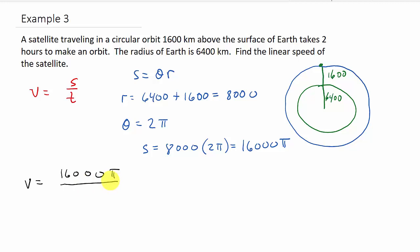Now, the angle that it made is two pi. Now, how long did it take it to make that angle? Well, it took it two hours. So our time t is two. And so this would be 8,000 pi. 8,000 pi.